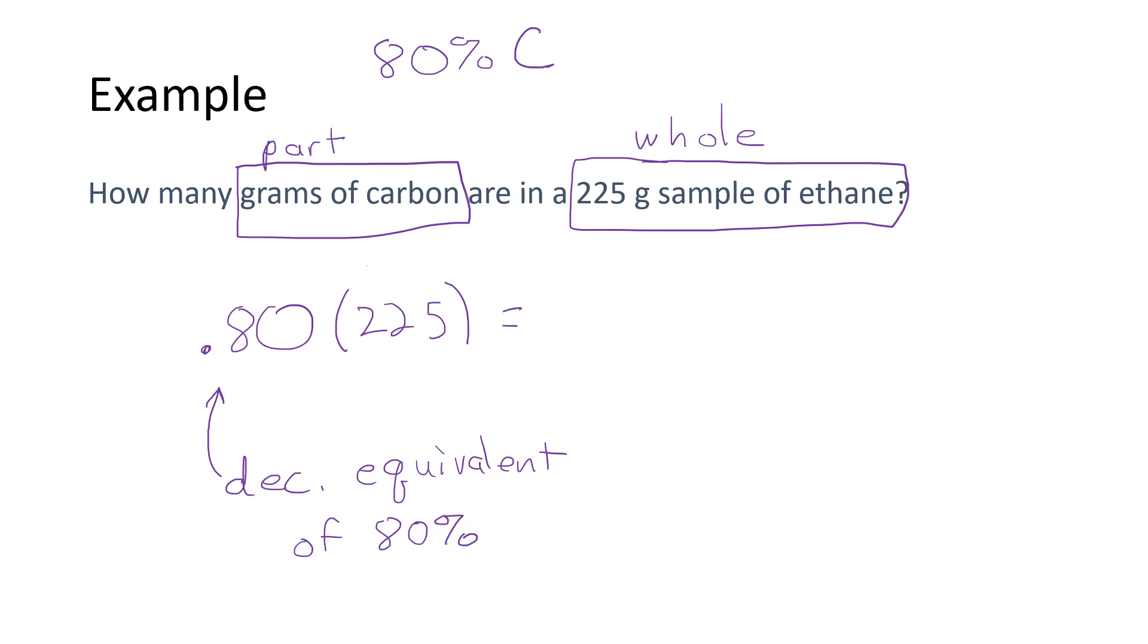And so let's see, if I take 0.8 times 225, I get 180. So out of this 225 gram sample of ethane, 180 grams of the sample are carbon.